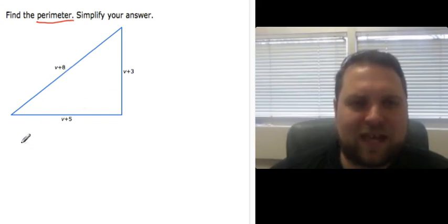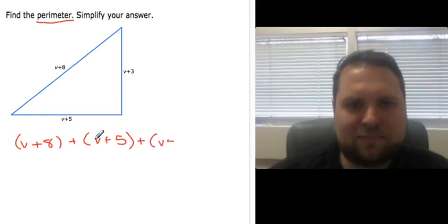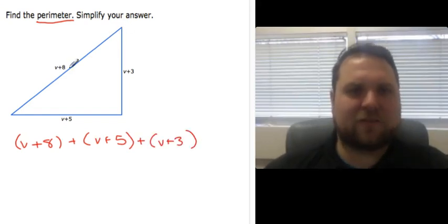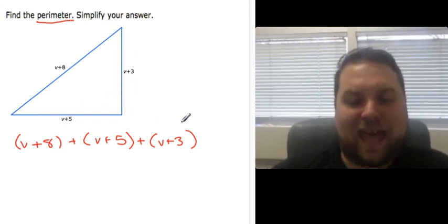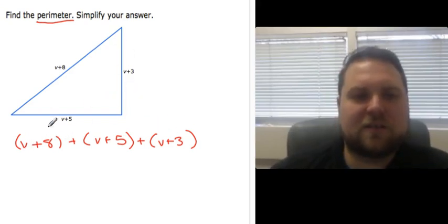So if I add those three together, I will get v plus 8, that's a polynomial so let's put it in parentheses, plus v plus 5 plus v plus 3. And since this is a triangle with three sides, I would expect to add three things together and so I do.